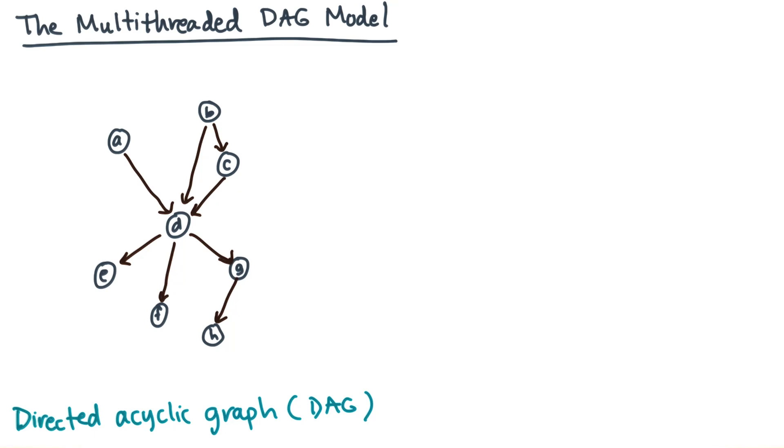In the multithreaded DAG model, you represent a parallel computation by a directed acyclic graph, or a DAG, like this one.